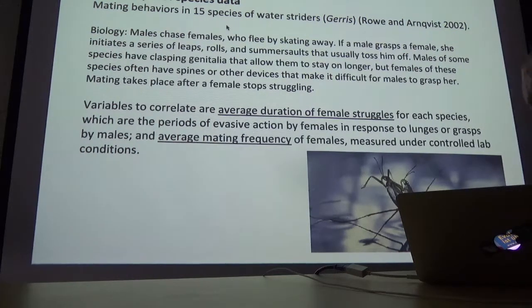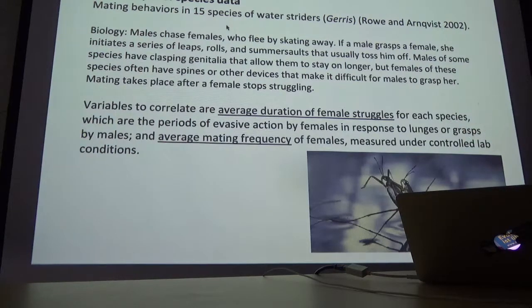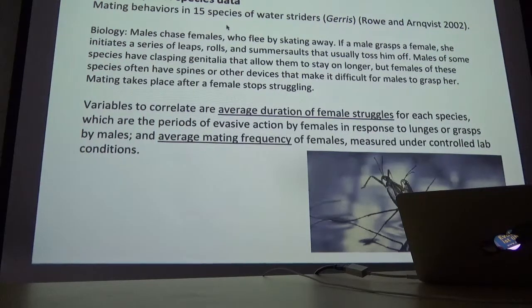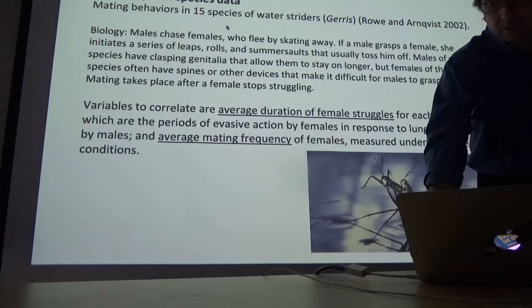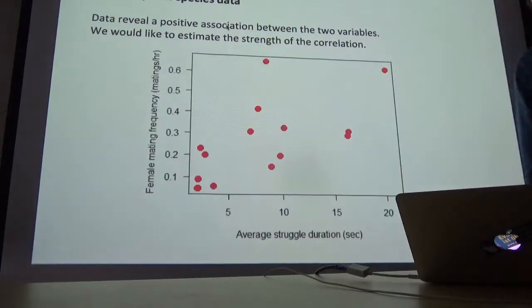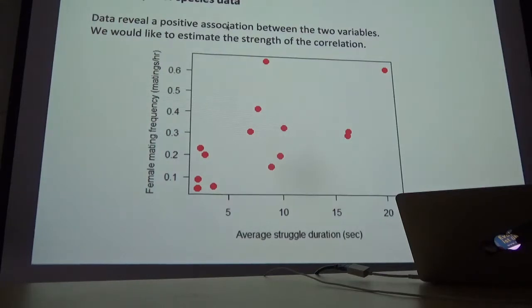Mating does take place, usually because a female stops attempting to toss the male off. Some of the variables measured in this study to investigate the co-evolution of males and females were things like average duration of female struggles and average mating frequency. Those are the two variables we're going to compare — is there an association? That's a thing one would typically investigate when comparing species to try to learn something about the basis of the mating system.